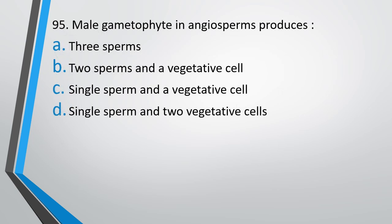Question number 95: Male gametophyte in gymnosperm produces — option A: three sperms, option B: two sperms and a vegetative cell, option C: single sperm and a vegetative cell, option D: single sperm and two vegetative cells. The correct answer is option B — two sperms and a vegetative cell.